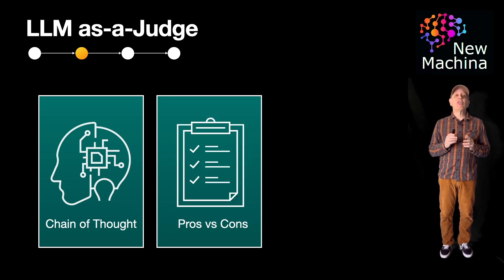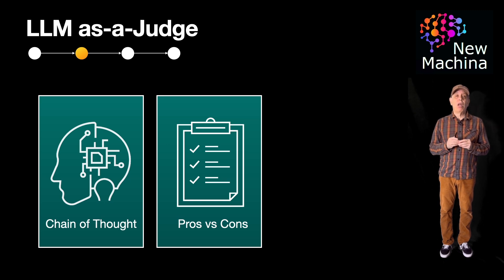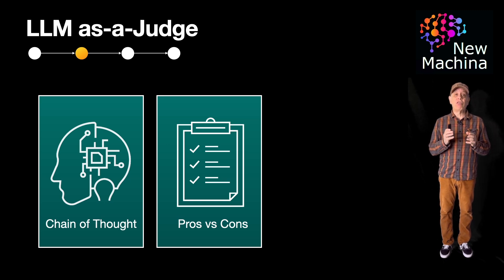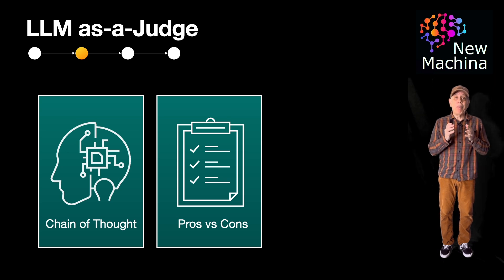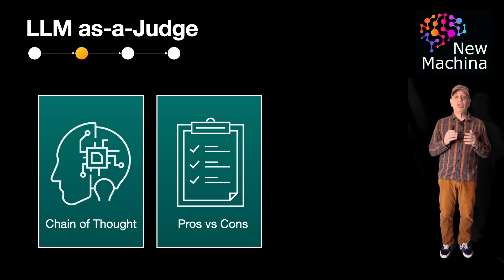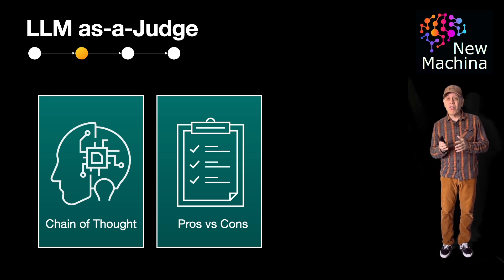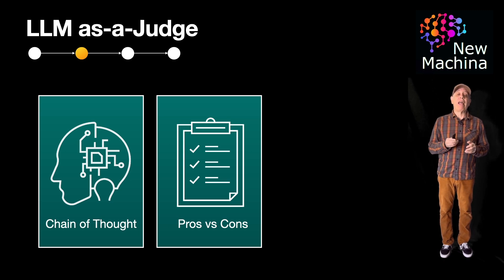The second method is called critique the vote. First, the judging LLM writes a critique of the answer, then it votes based on the critique. Think of the LLM judge as generating the pros and cons first, and then the verdict after.